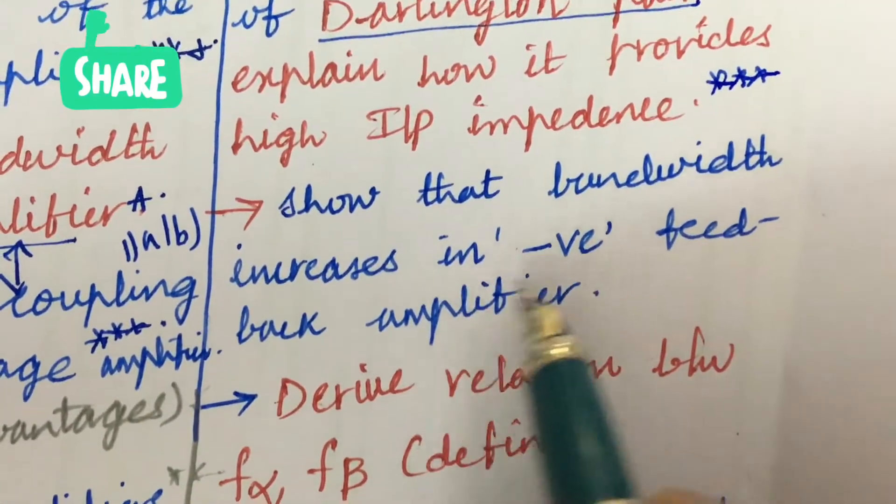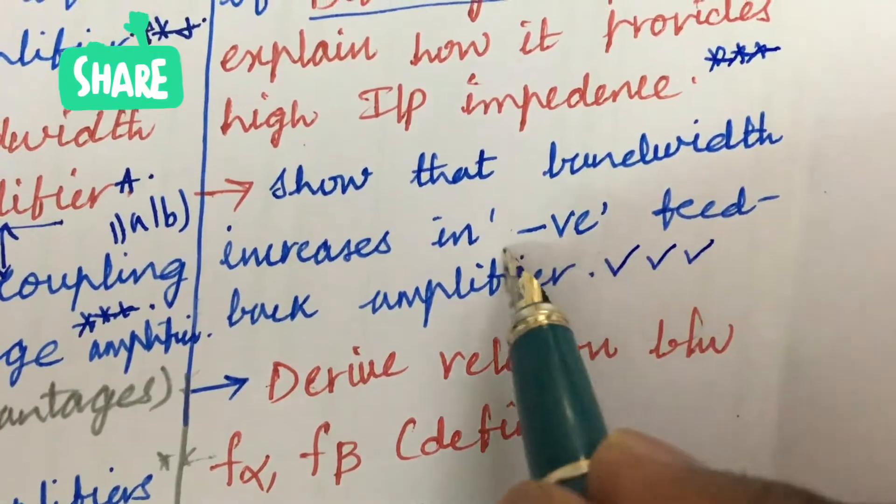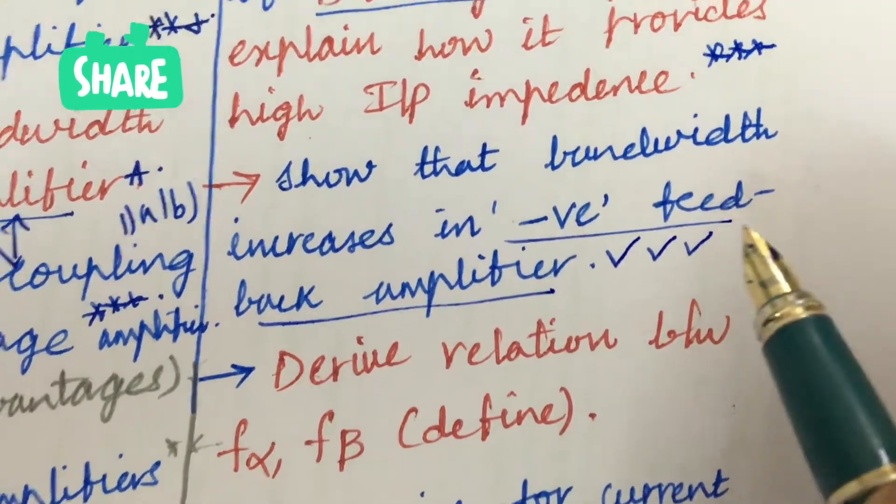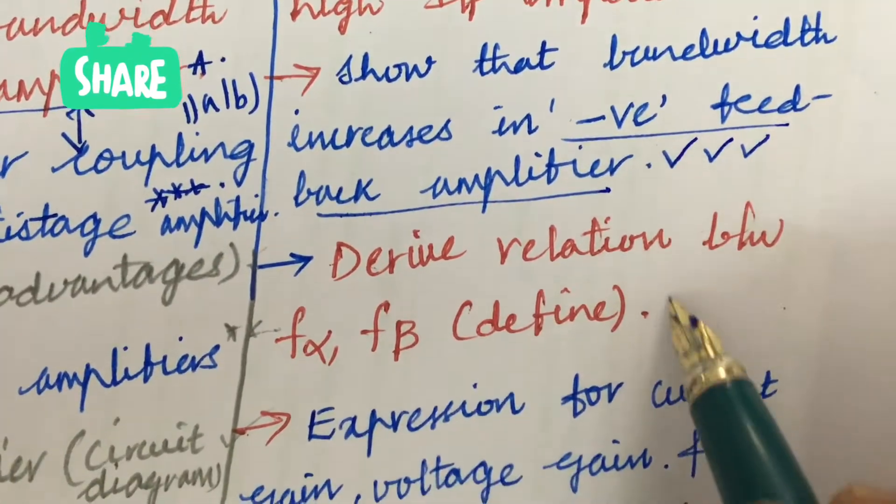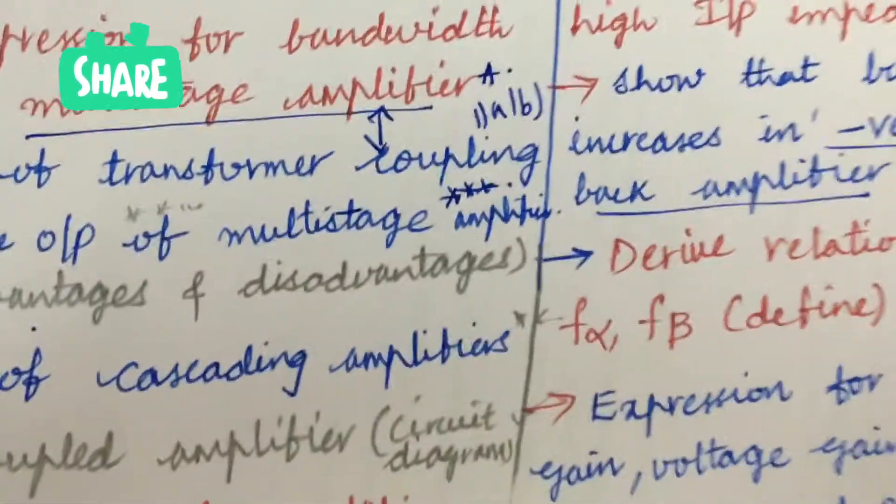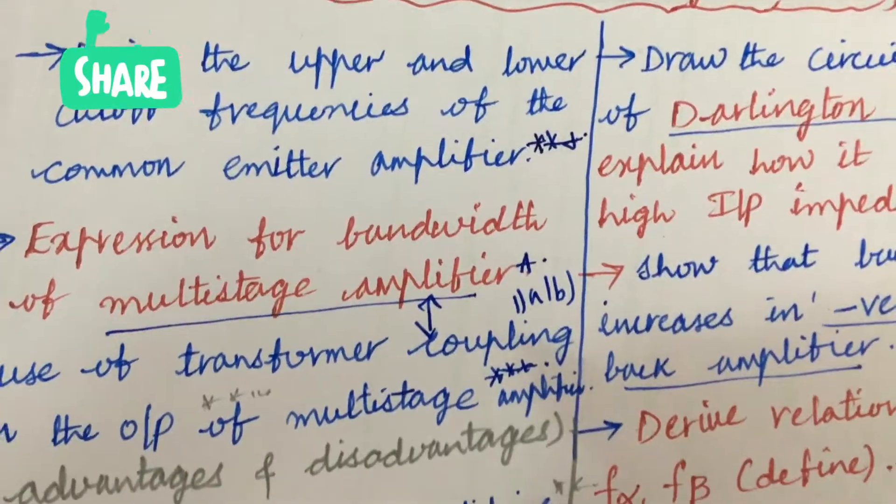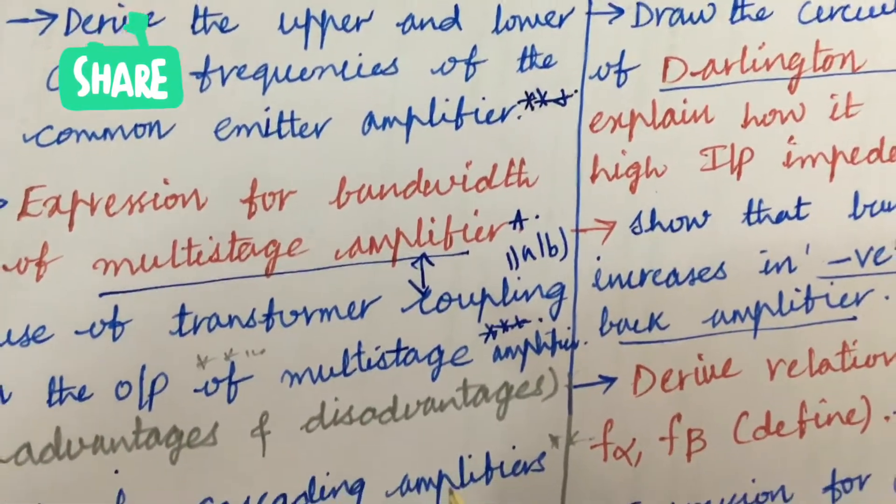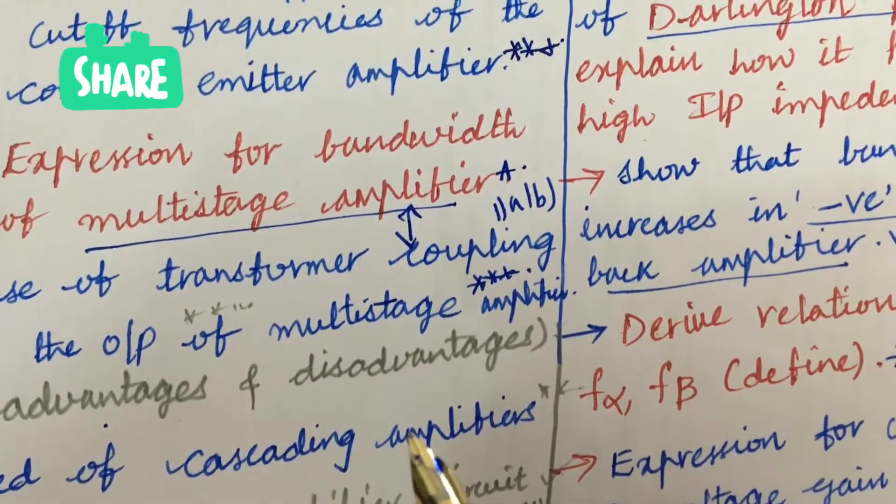Show that the bandwidth increases in negative feedback amplifier. Please do concentrate on negative feedback amplifier - for sure you are going to get one question. Derive relation between f alpha and f beta and define it - also asked many times. This is all about 2a as well as 2b. As per the analysis done by me, taking into consideration the earlier question papers, the question paper pattern as per COVID is 8, of which you are supposed to write 5.